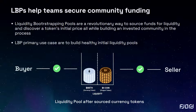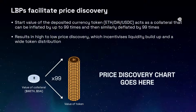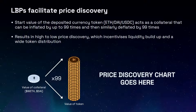LBP's primary use case is to build liquidity, enabling tokens to be traded on a DEX and allowing for community funding to build out project ideas. Liquidity bootstrapping pools work by gradually releasing the project token against the value of another token, such as Ethereum or a stablecoin, over a set period of time. The value of your token can be inflated by up to 99 times when compared to the value of the currency token. The price then changes dynamically throughout the event where the value of the token reduces against the value of the initial liquidity and can be deflated by 99 times.